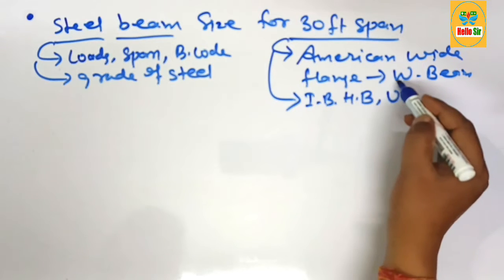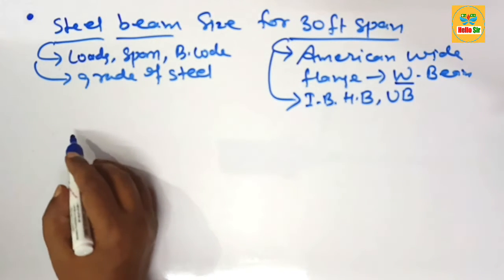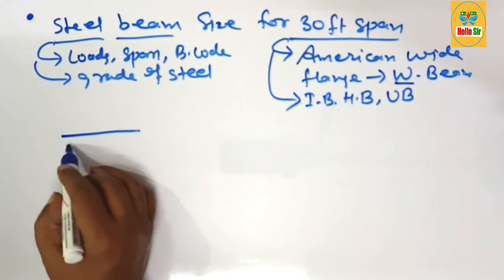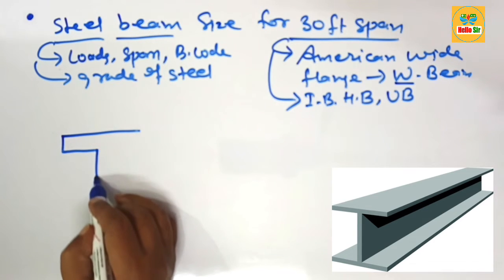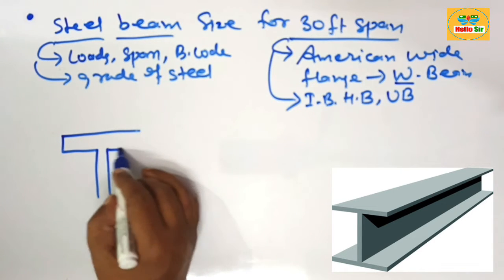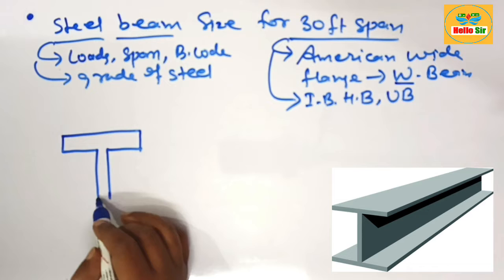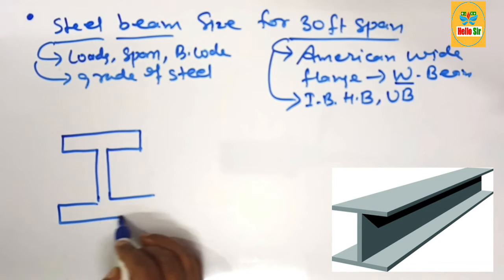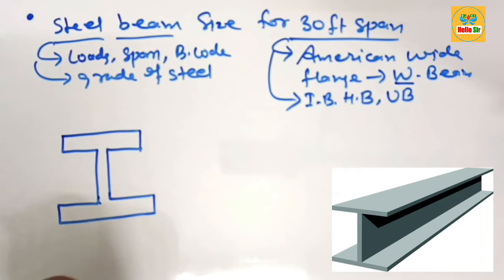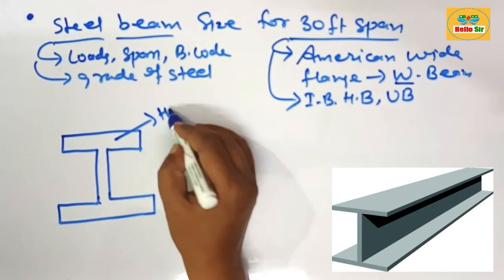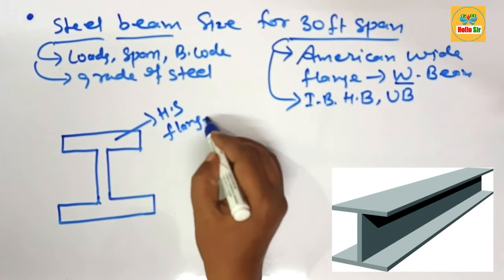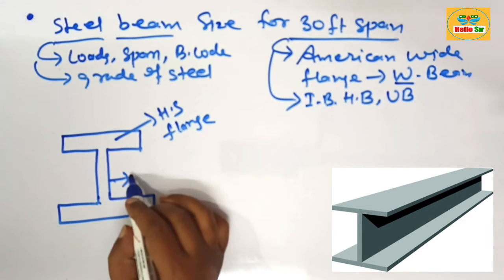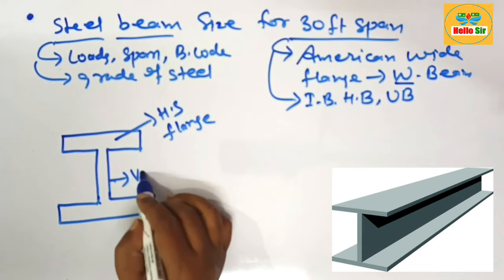First we understand about the W beam - that is American wide flange beam. Here we make rough diagram to understand about different parts of this beam. It looks like H shape or I shape and it is wide flange beam. This is horizontal section of the beam which is known as flange, and this one is vertical height of the beam which is known as web.